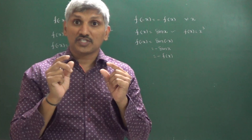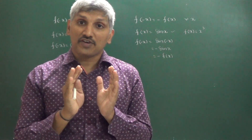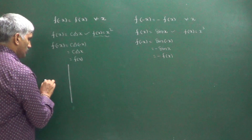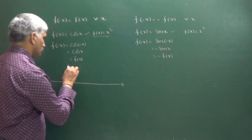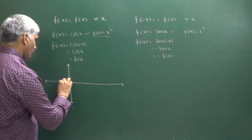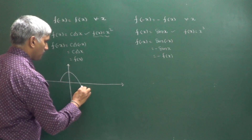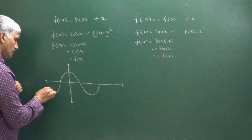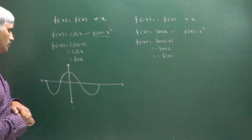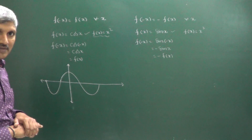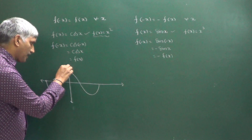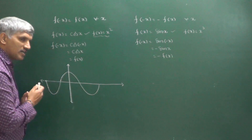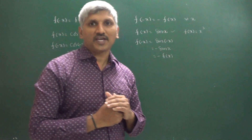Now, what is the geometrical interpretation of even and odd functions? Observe the graph of f of x equal to cos x. Drawing the graph on both sides up to 3 pi by 2. If you observe the graph properly, treating the y-axis as a mirror, you can see it is a reflection — that means the graph is symmetric about the y-axis.